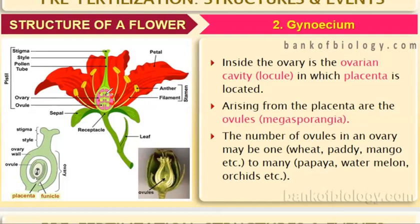These six structures are the ovules. Ovules are also called megasporangia because they carry the megaspores.